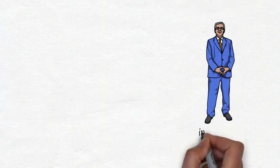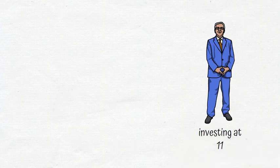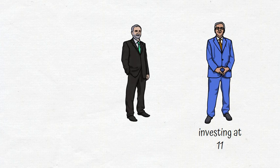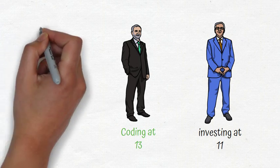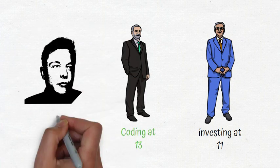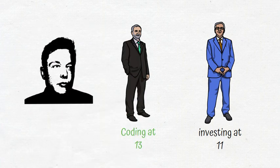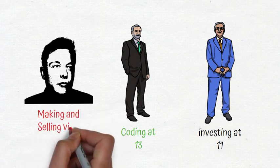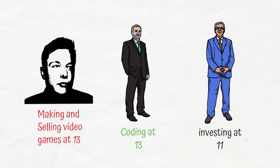It's no different in business. Warren Buffett started investing at 11. Bill Gates wrote his first program at 13. Elon Musk had already sold a video game by the time he turned 13. When you see someone at the top of their field in anything, realize that they almost certainly worked very hard, for a very long time, to get there.